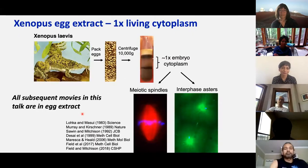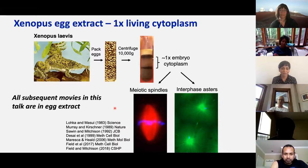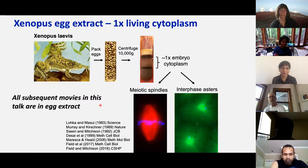We can't look live into frog eggs. But for many years we've been able to make a beautiful extract system by collecting the eggs, compacting them in a centrifuge tube, and then crushing them — we can get out this kind of 1X living cytoplasm. In that cytoplasm, we think we can recapitulate most of the events of early frog embryogenesis, including building spindles and asters from a microtubule perspective. But this cytoplasm is quite cloudy — it's full of organelles, actin, and other things.